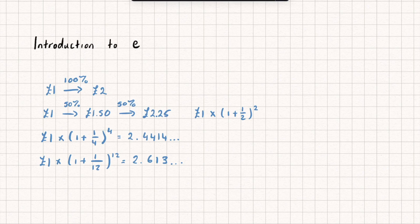So let's generalise this formula. We could say it's our £1 multiplied by 1 plus 1 over n to the power of n, where n is kind of how many instalments we're getting.